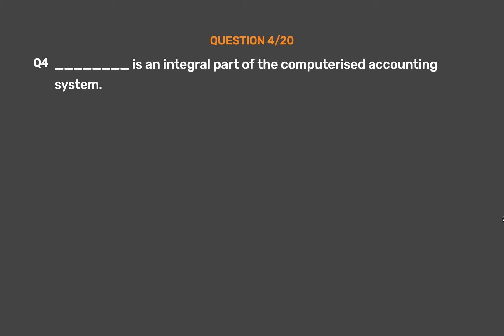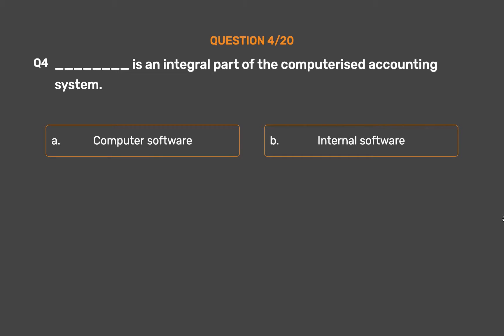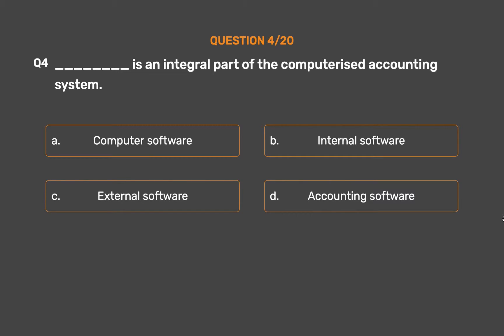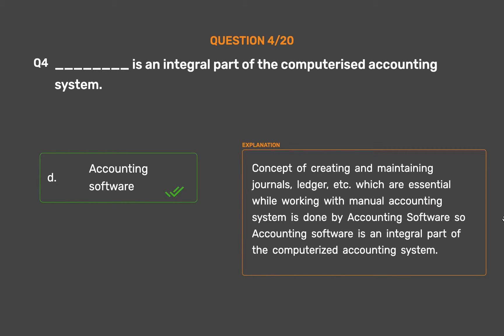Question number 4. Underscore is an integral part of the computerized accounting system. Option A: Computer software. Option B: Internal software. Option C: External software. Option D: Accounting software. The correct answer is Option D — Accounting software. The concept of creating and maintaining journals, ledger, etc., which are essential while working with a manual accounting system, is done by accounting software. So accounting software is an integral part of the computerized accounting system.